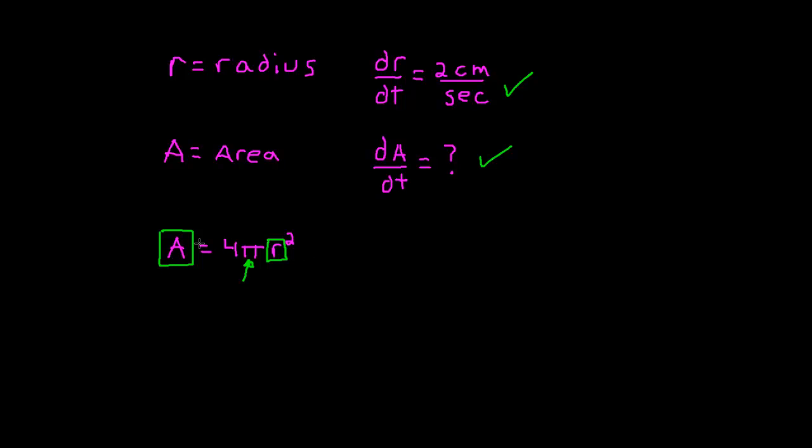So the derivative of the left hand side is dA/dt and the derivative of the right hand side. Now I'm just going to treat this as a constant right here because it is a constant. And that derivative of the right hand side is going to be the constant multiplied by the derivative of r².